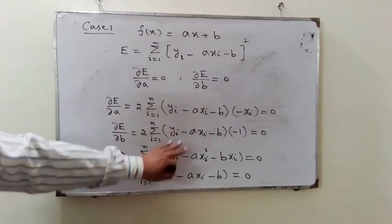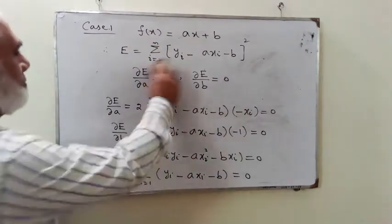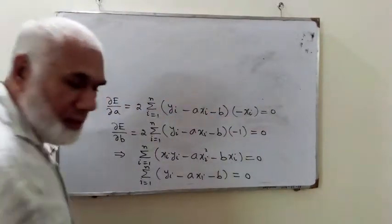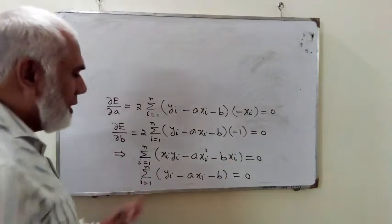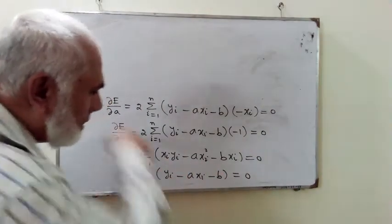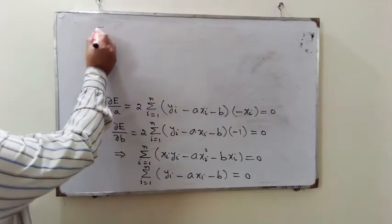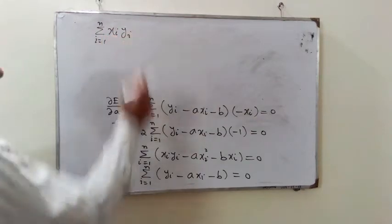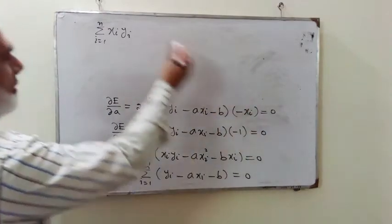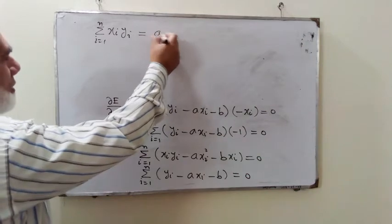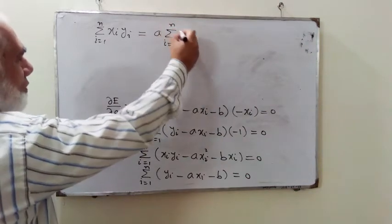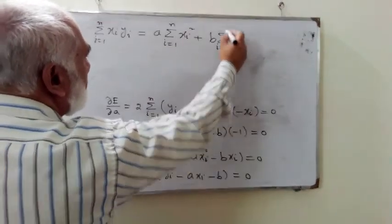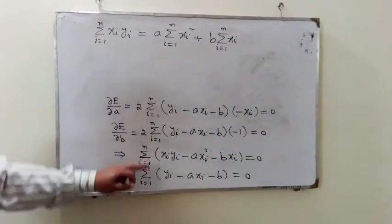These two simplified equations are our working forms. Using the principle of sigma notation, we distribute it within the brackets and shift terms to the right side. From the first equation, keeping sigma(xi*yi) on the left side and shifting the remaining terms gives: sigma(xi*yi) = a times sigma(i=1 to n) of xi² plus b times sigma(i=1 to n) of xi.